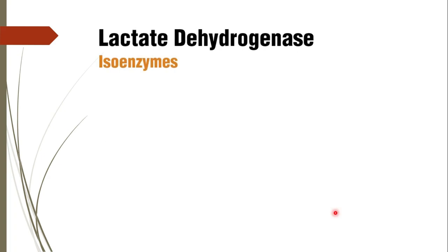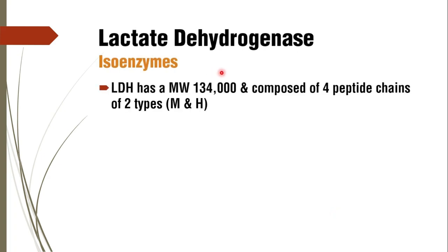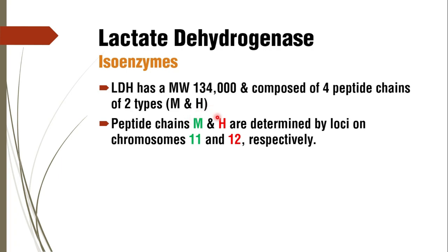Lactate dehydrogenase has a molecular weight of 134,000 and is a tetramer composed of four peptide chains of two types: M and H. The M subunit is encoded by a locus on chromosome 11 and the H subunit by a locus on chromosome 12 — M for muscle and H for heart.